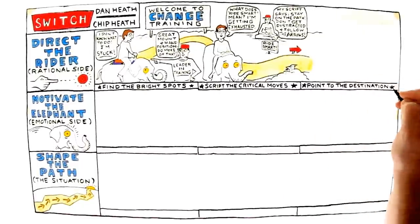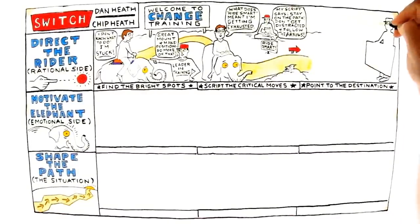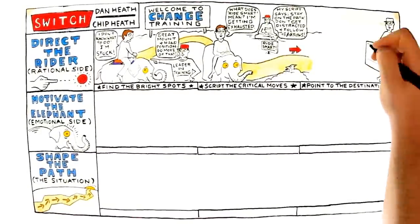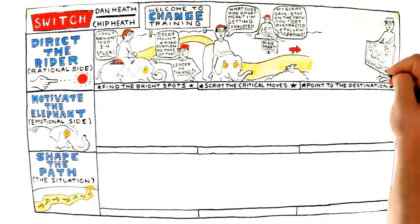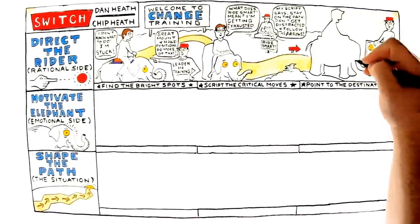Point to the destination. A big goal motivates both the rider and the elephant. When you point to and describe a compelling destination, you redirect thinking because the rider begins to figure out how to get there.